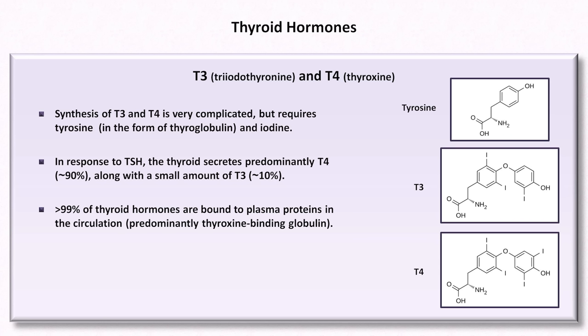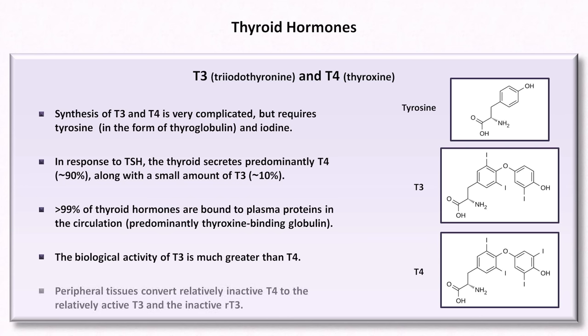For example, in steroid use and in cirrhosis, less thyroxine binding globulin is produced, resulting in a higher proportion of free hormones. The opposite effect occurs during pregnancy, in which the liver produces higher than normal amounts of thyroxine binding globulin. Now, despite the fact that the thyroid secretes much more T4 than T3, the biological activity of T3 is much greater than T4. The peripheral tissues convert some of the relatively inactive T4 to the relatively active T3, as well as some to the completely inactive reverse T3, also known as RT3.